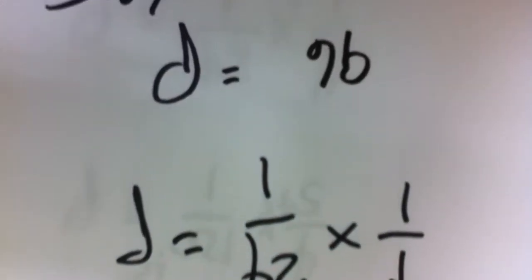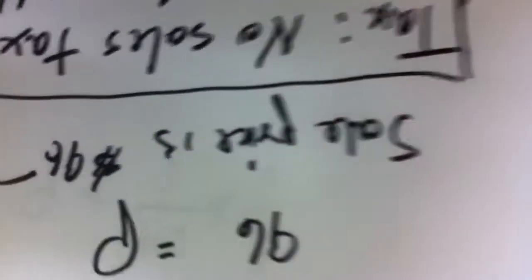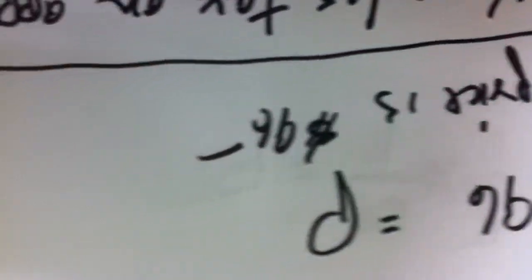4 times 24 is 96. So the sale price is $96. Now what about the tax?